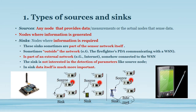The first scenario covers different types of sources and sinks. Whenever we design a wireless sensor network, different types of sources and sinks will be available. A source is defined as any node that provides data — in other words, a node where information is generated.